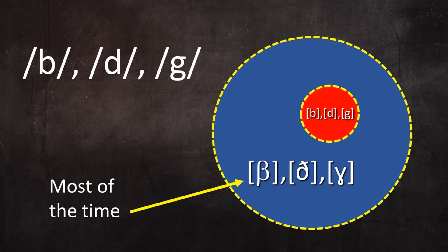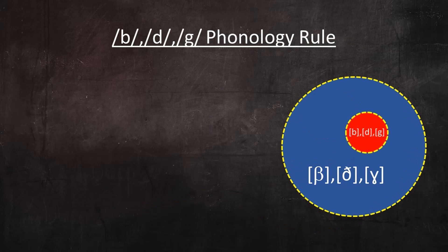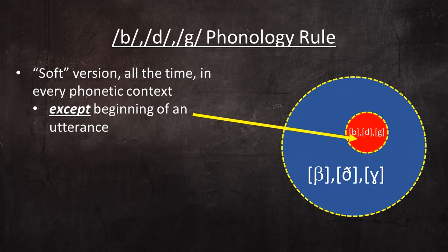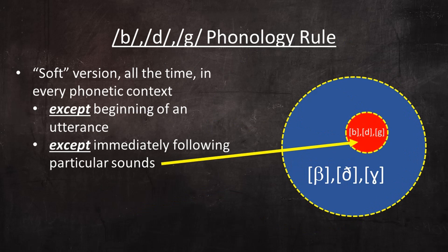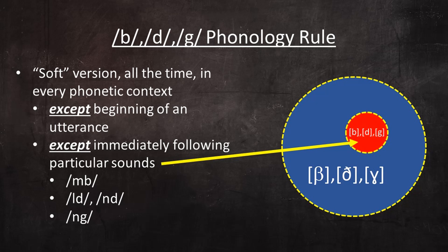So most of the time Spanish B, D, and G phonemes are pronounced as approximants or fricatives, but occasionally they're pronounced as stops. The rule is very simple: B, D, and G are pronounced with the soft version all the time in every phonetic context, except when they come at the beginning of an utterance, or when they appear immediately following particular sounds. For B, that sound is M. For D, it's two sounds: L and N. And for G, it's the N sound.